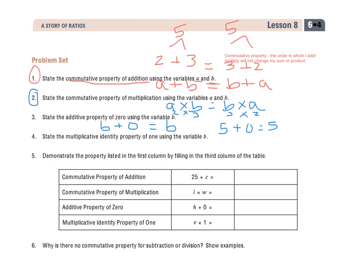It just doesn't change the value. The multiplicative identity property of 1 using the variable B. So B times 1 is still going to equal B. Just like 5 times 1 is going to equal 5.